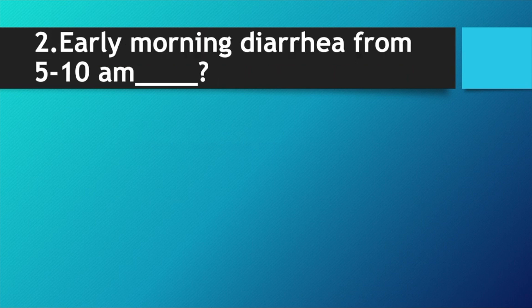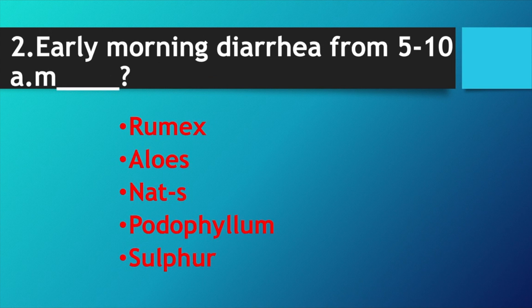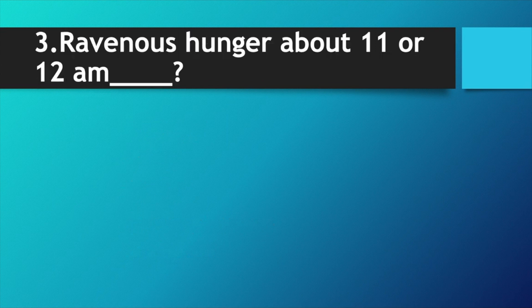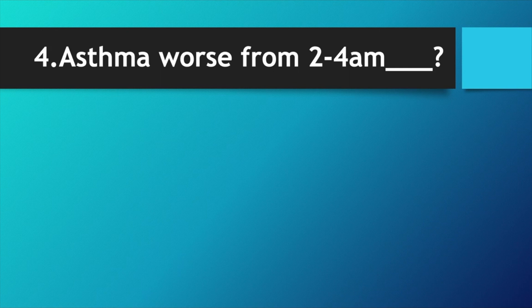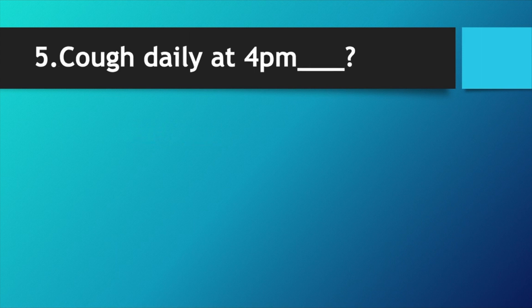Early morning diarrhea from 5 to 10 a.m.: Rumex, Aloes, Natrum sulph, Podophyllum, and Sulphur. Ravenous hunger about 11 or 12 a.m.: Sulphur. Asthma from 2 to 4 a.m.: Kali carb. Cough daily at 4 p.m.: Lycopodium and Millefolium.